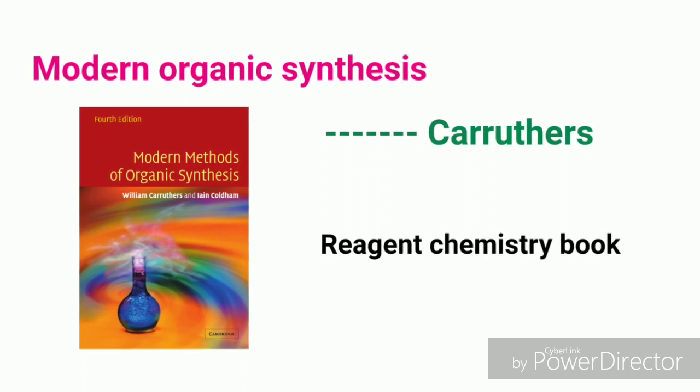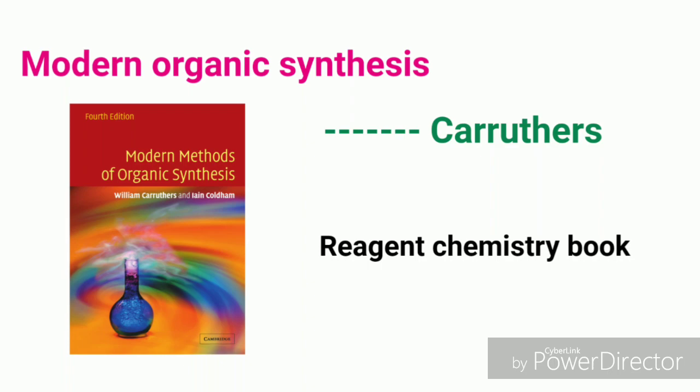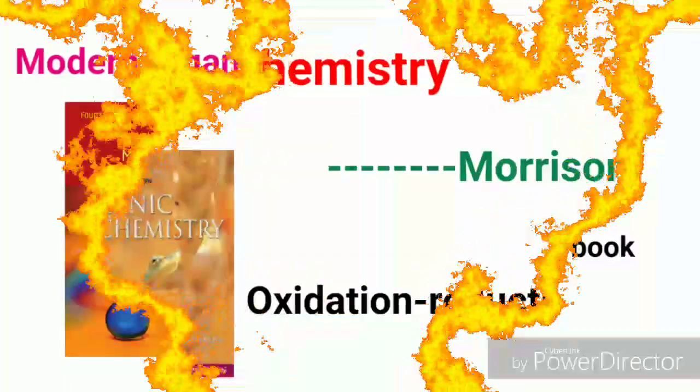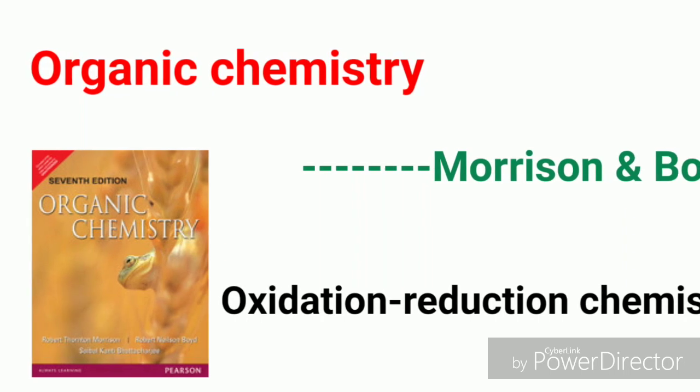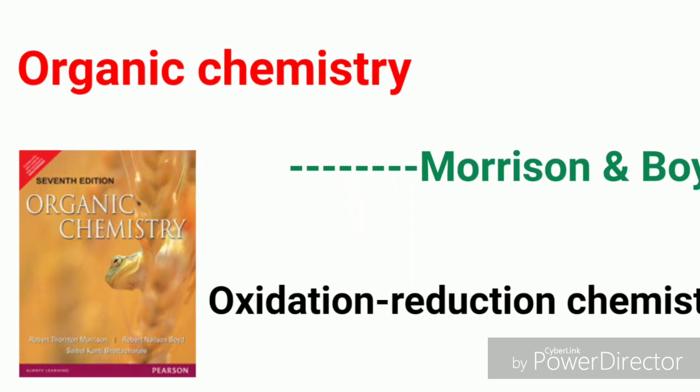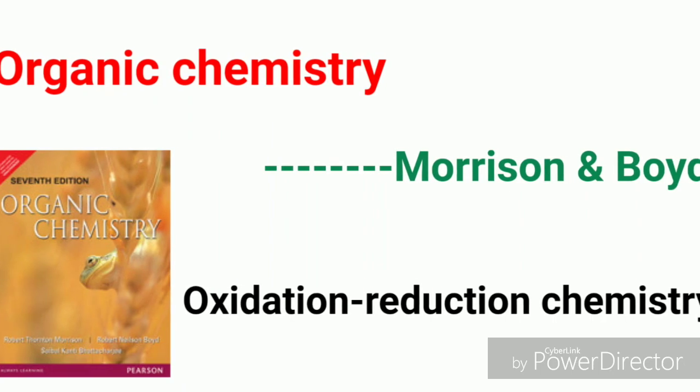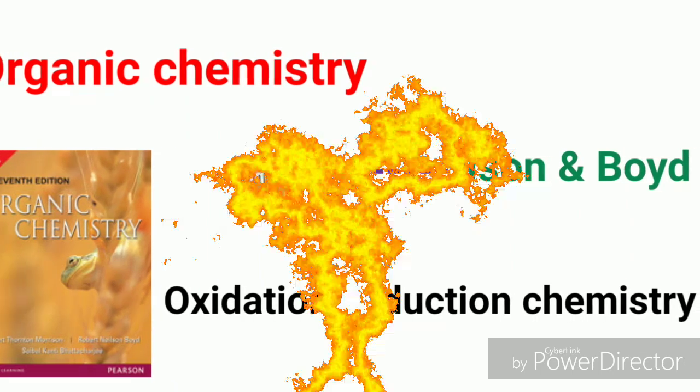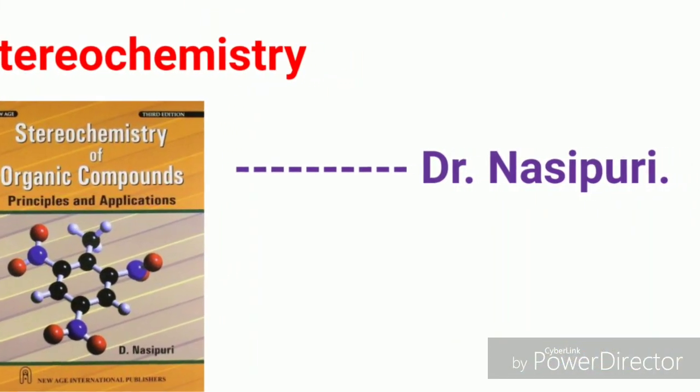The next important book for organic chemistry is Organic Chemistry by Morrison and Boyd, which is best for oxidation and reduction chemistry. And the final part, that is stereochemistry, you can follow the books written by Dr. Nasipuri.